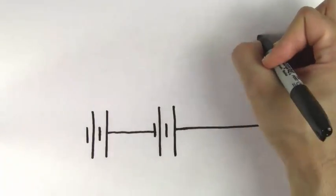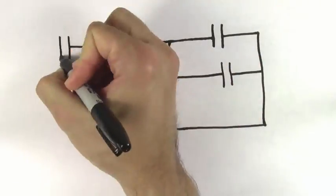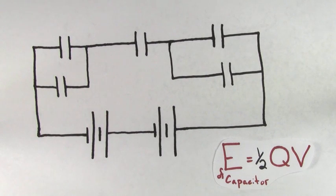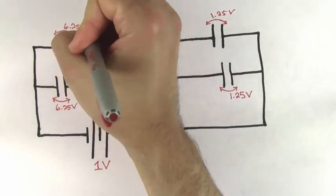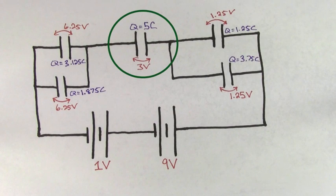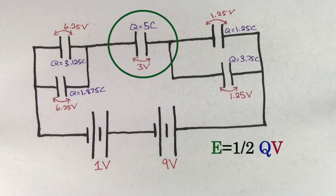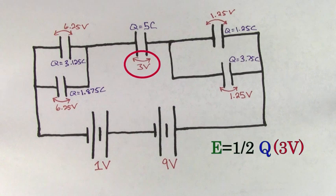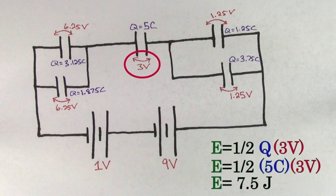But if you're looking at a case where multiple batteries are hooked up to multiple capacitors, then in order to find the energy of a single capacitor, you've got to use the voltage across that particular capacitor. In other words, if you were given this circuit with these values, you could determine the energy stored in the middle capacitor by using one half QV. You would just have to be careful to use the voltage of that capacitor and not the voltage of the battery. Plugging in 5 coulombs for the charge lets you figure out that the energy is 7.5 joules.